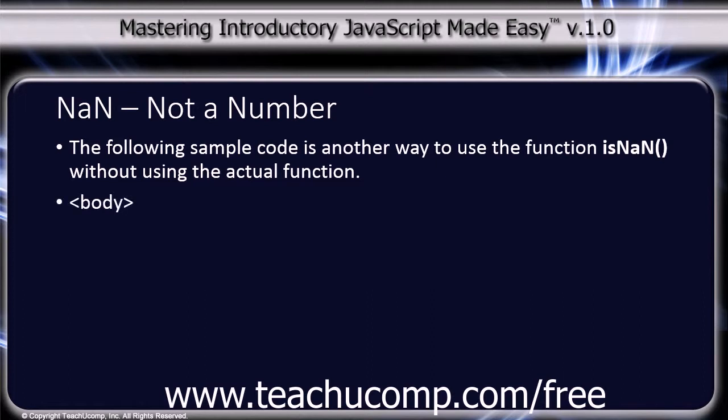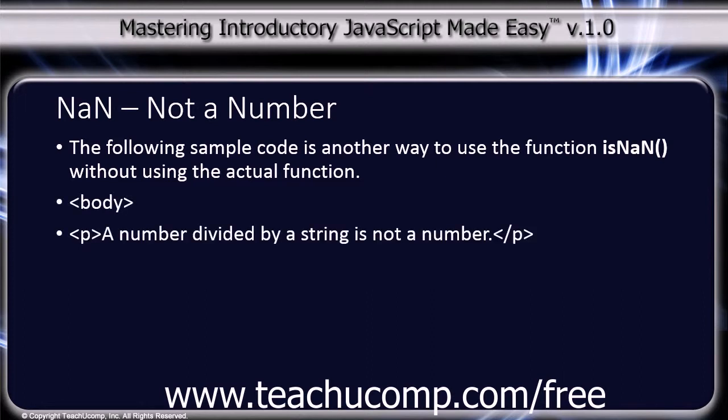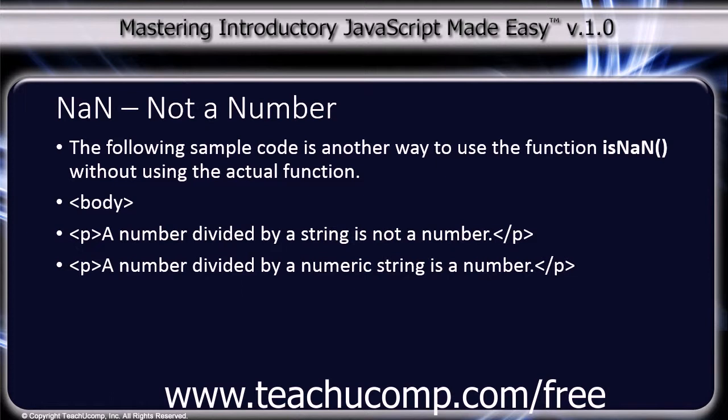The body tag contains two paragraph tags. The first paragraph reads: 'A number divided by a string is not a number.' The second paragraph reads: 'A number divided by a numeric string is a number.'